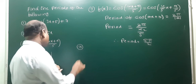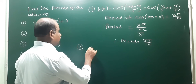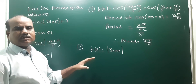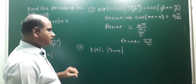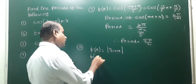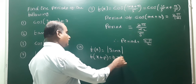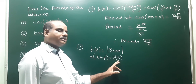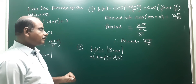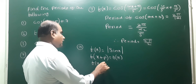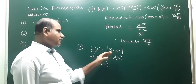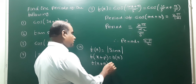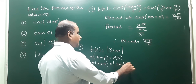Fourth one: modulus of sin(x). f(x) = |sin(x)|. Using the periodic function definition: if f(x + p) = f(x), then p is the period. Here we choose f(x + π), since the original function f(x) = |sin(x)|. We compute |sin(x + π)|.